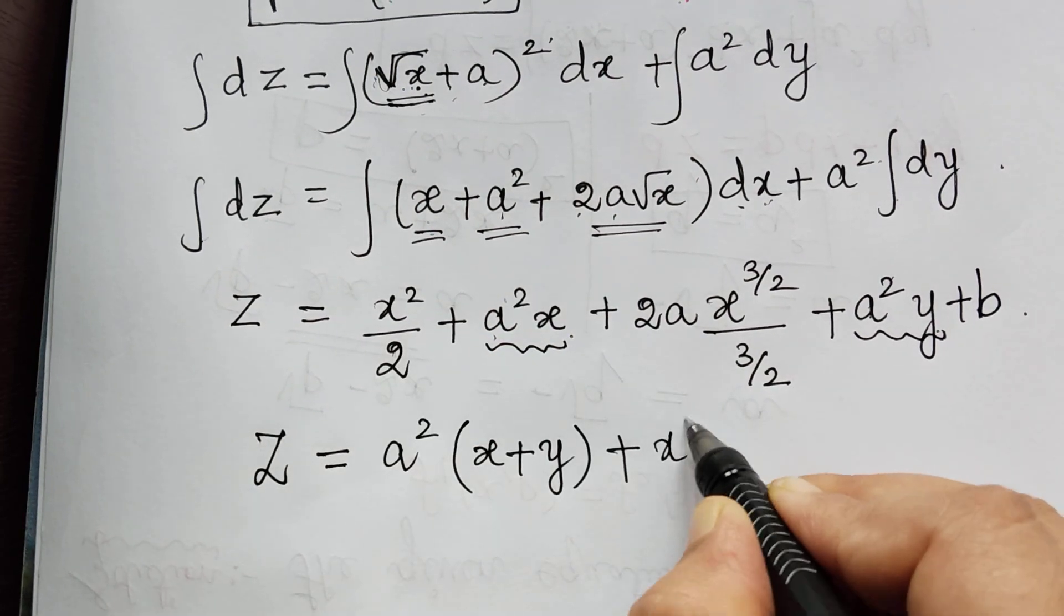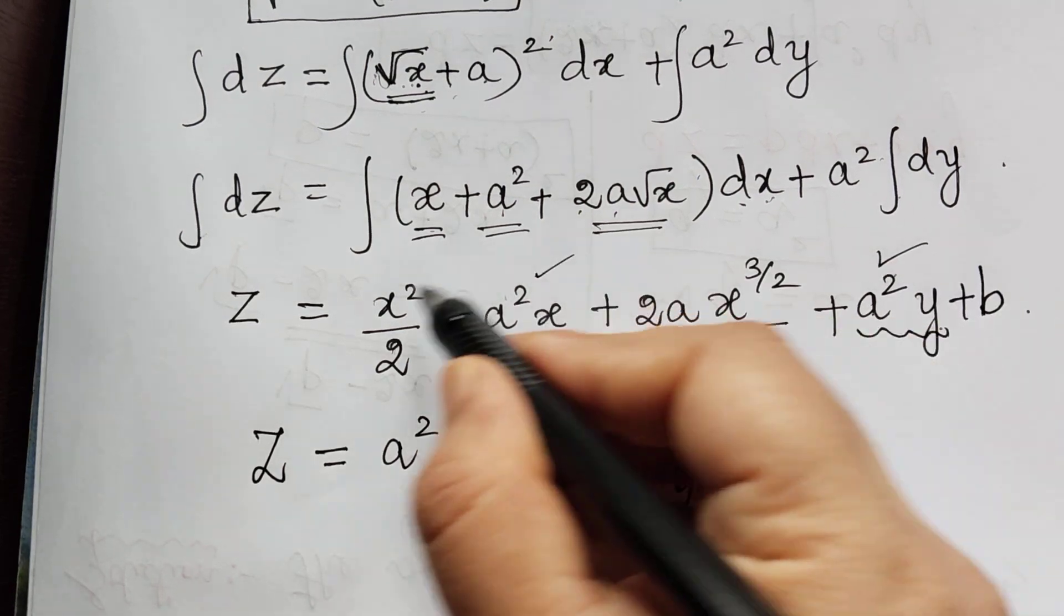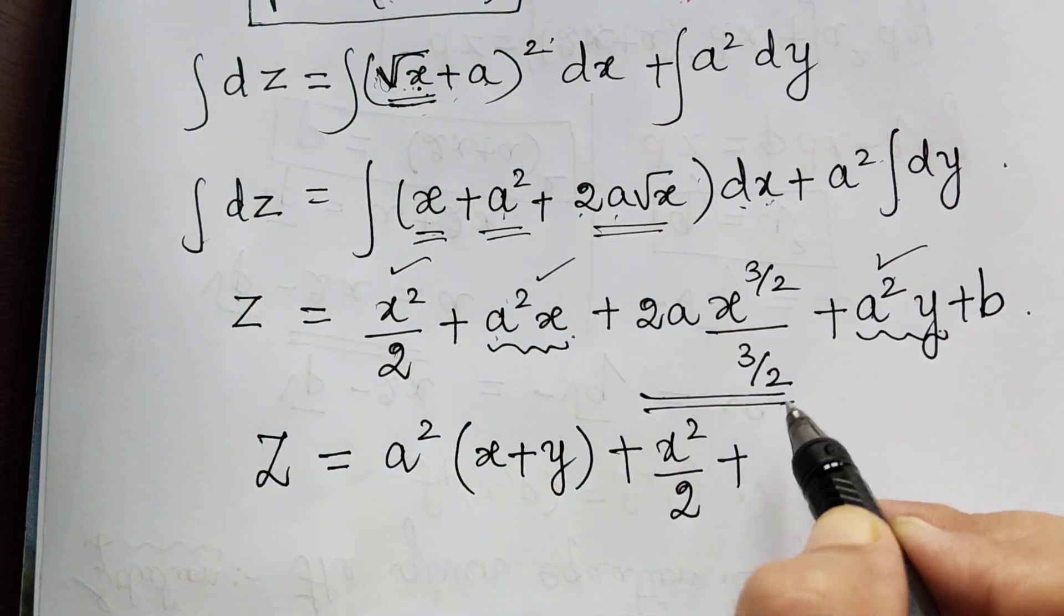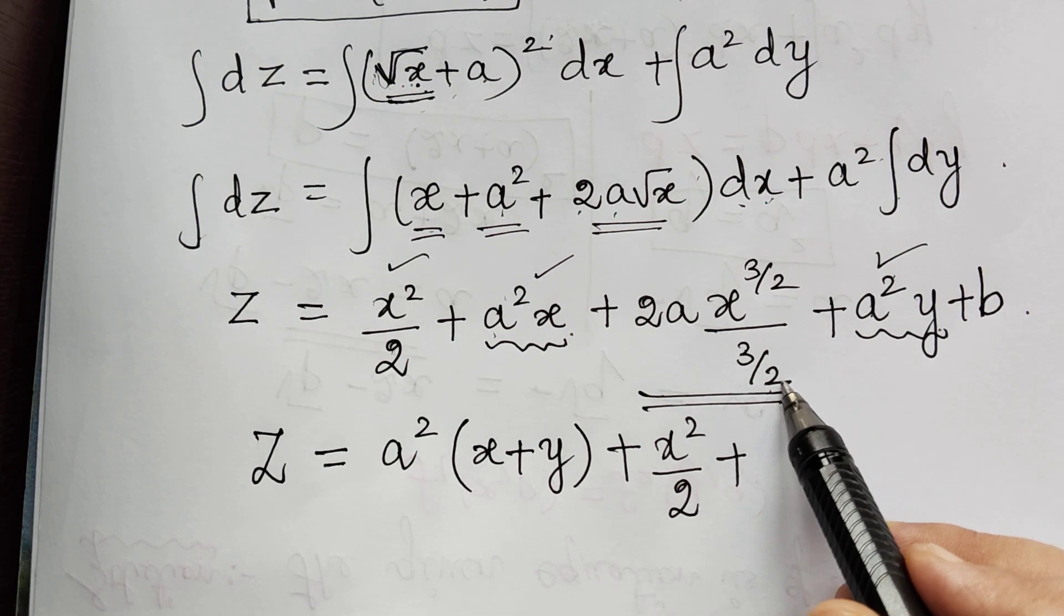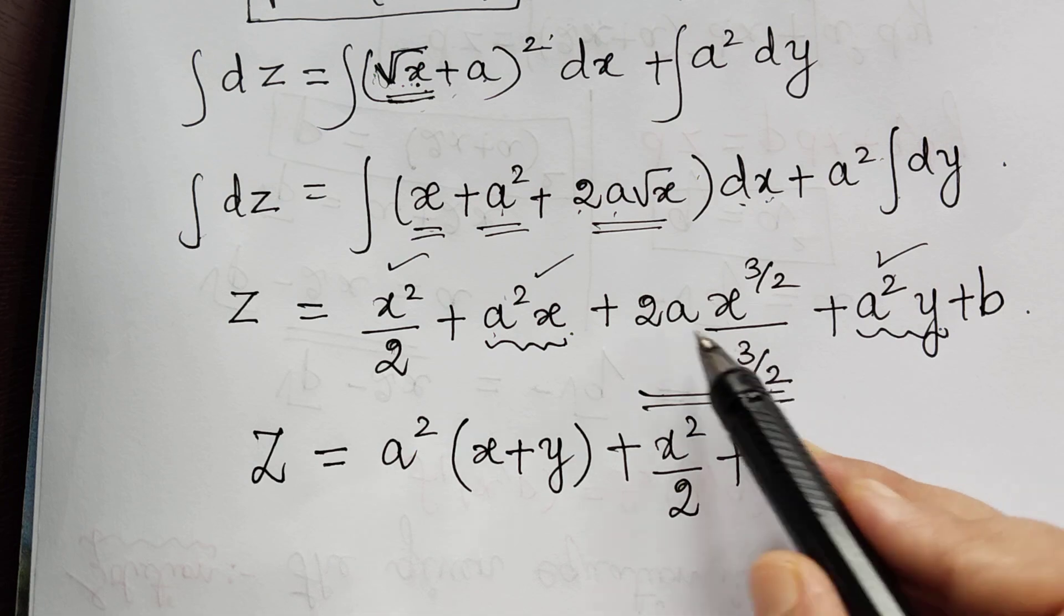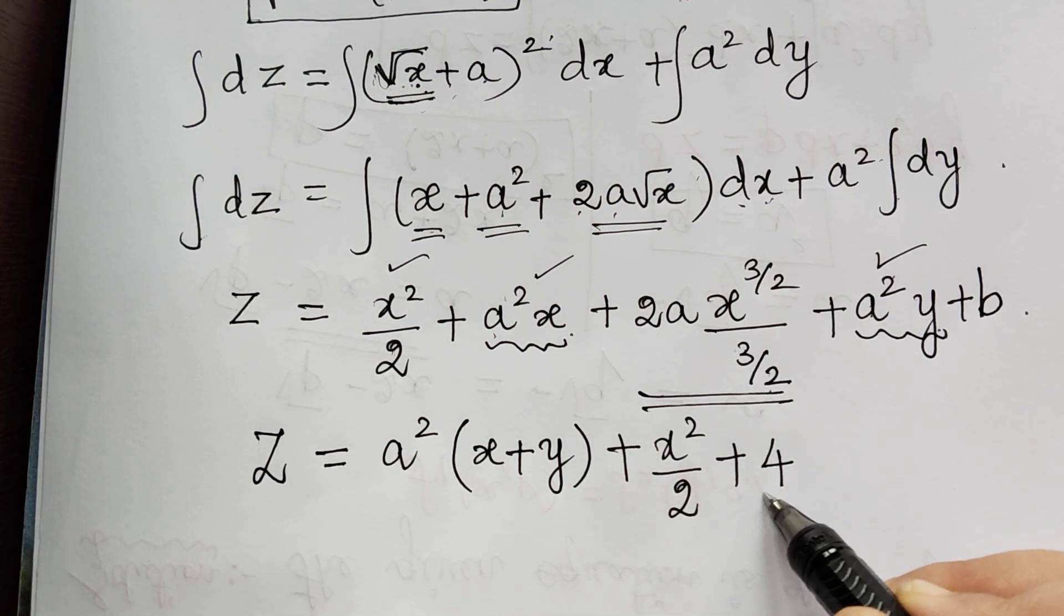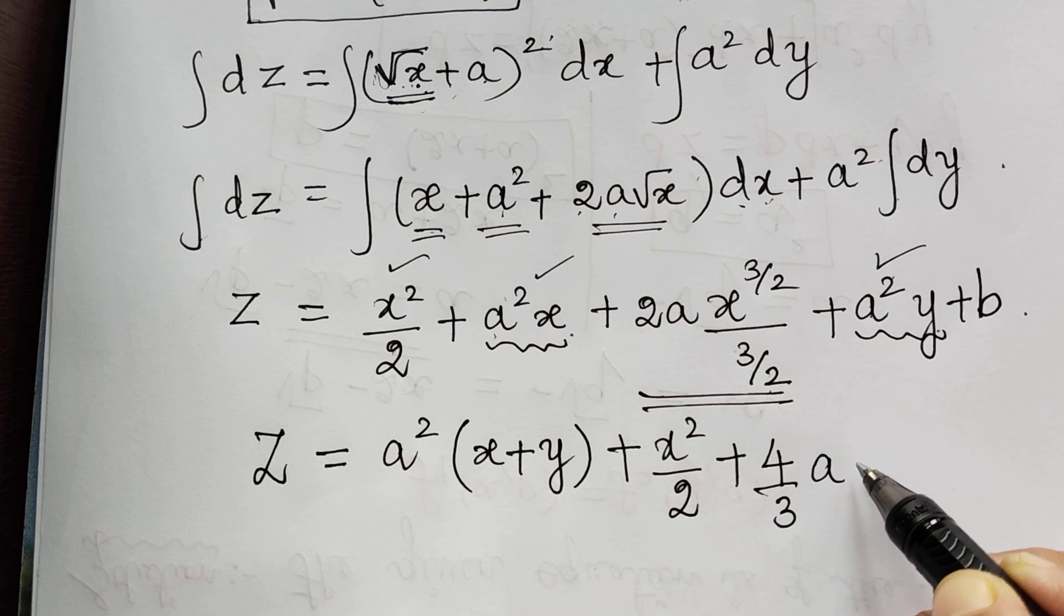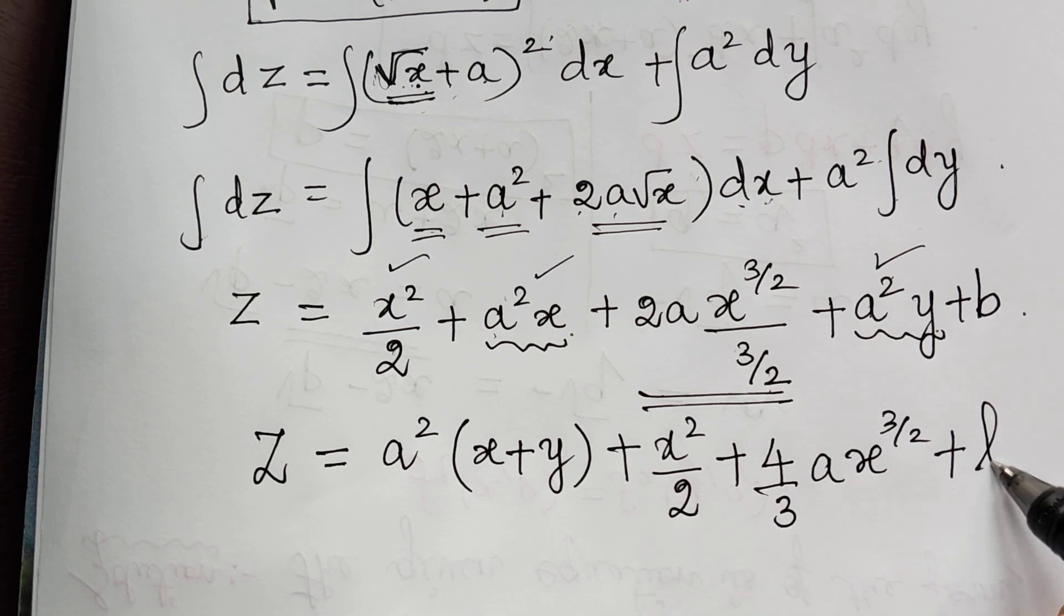so these three terms are completed. Now next we have this term. We have 3 by 2 in the denominator. So this denominator of the denominator becomes the numerator. This 2 gets multiplied with this 2 and it becomes 4. So 4 by 3 a x to the power 3 by 2 plus the constant of integration b.